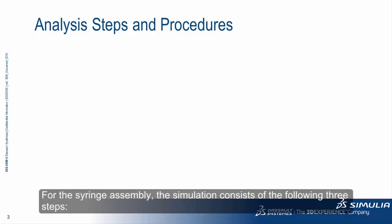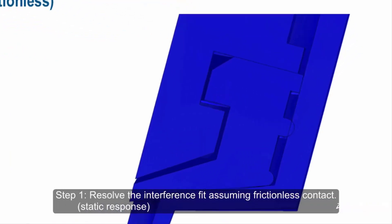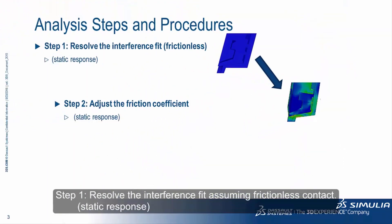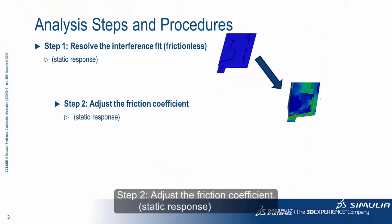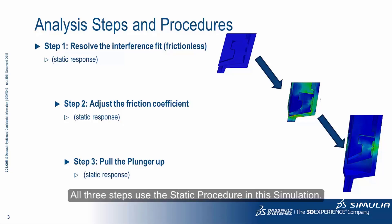For the syringe assembly, the simulation consists of the following three steps. Step 1, resolve the interference fit assuming frictionless contact. Step 2, adjust the friction coefficient. Step 3, pull the plunger up. All three steps use the static procedure in this simulation.